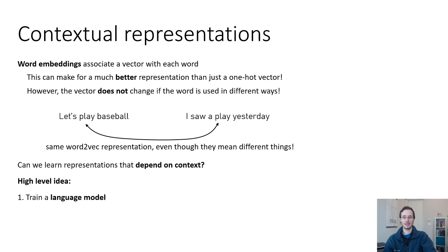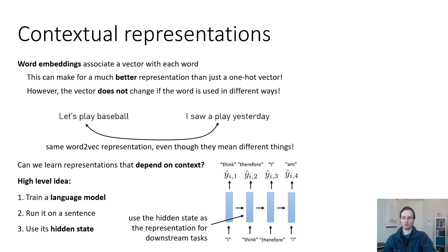So could you instead learn a representation that depends on context? The high-level idea here will be to train a language model. So one of these models that we learned about that predicts the next word, given the word seen so far, and then run this language model on a particular sentence, like on the sentence let's play baseball, and then use the hidden state of that model as your representation. So the intuition behind this is that the hidden state of the model for that time step should represent something about the role that word plays in that sentence.